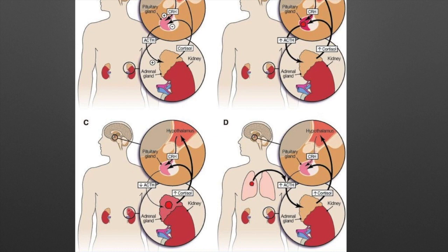That's helpful for visualizing what's going on in these different types of Cushing's — which hormones are high, low, inhibited, or being secreted. Now that that's out of the way, we can move on toward the signs and symptoms of Cushing's.